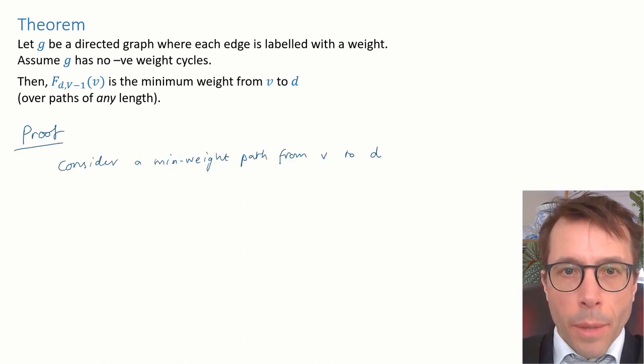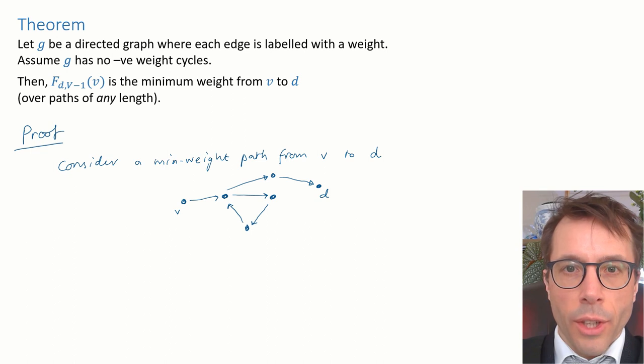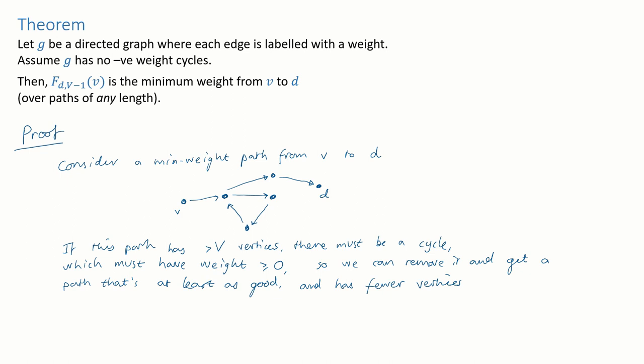Let's pick an arbitrary minimum weight path from v to d. It starts at v, hops around a bit, possibly has one or more cycles in it, and eventually reaches d. Now, let's count up how many vertices there could be in this path. If the path has more than v vertices along it, then there must be a cycle. There are only v distinct vertices in the entire graph. So if this path has a length more than v vertices, at least one of them must be repeated and therefore there must be a cycle. And what did we say about cycles? We said that the graph has no negative weight cycles. Therefore, if our path has a cycle, it must be a cycle with weight greater than or equal to zero. So we can just excise it from our path and we'll end up with another path that has fewer vertices and is at least as good.